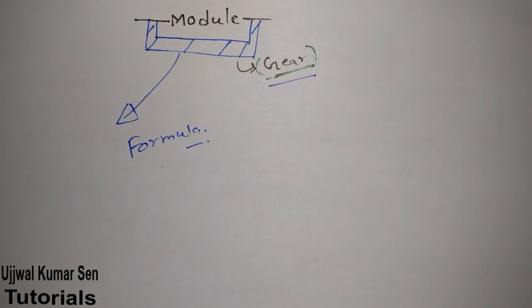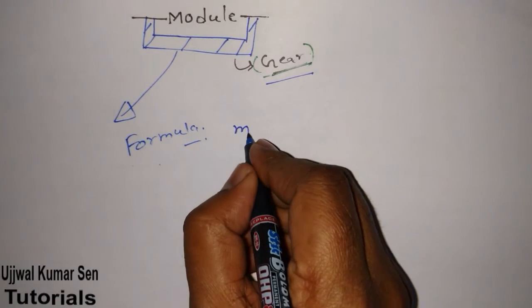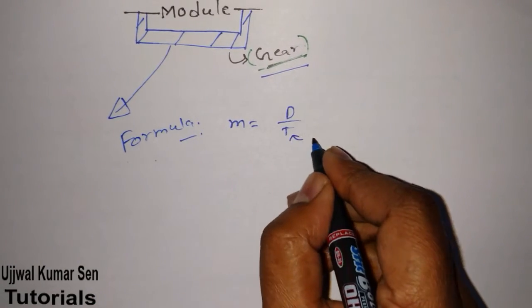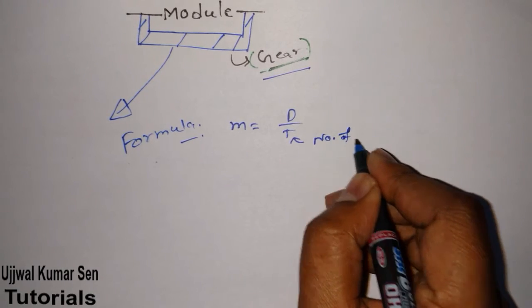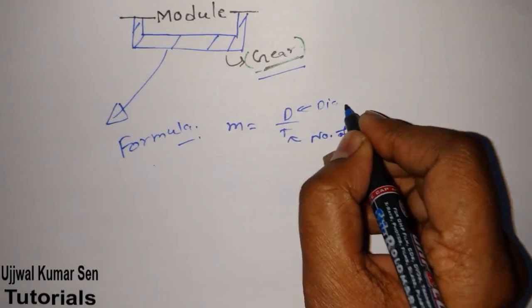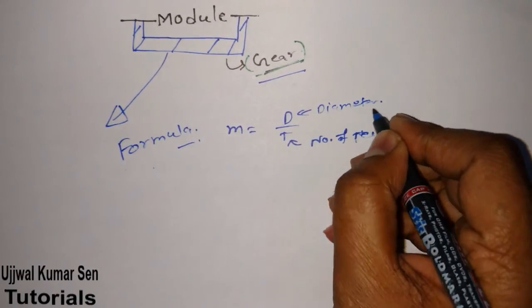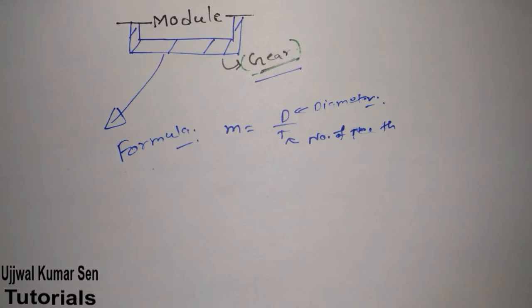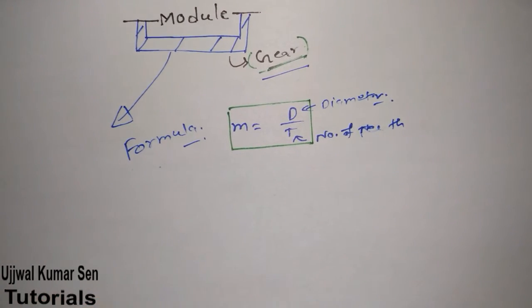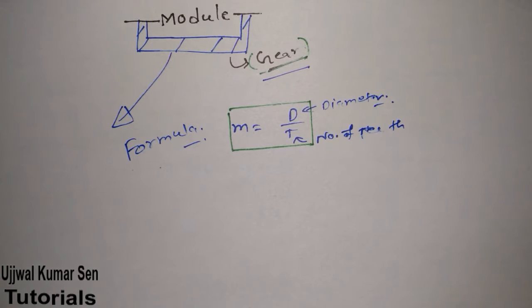So what is the formula for module? M is equal to D by T, where M is module, T is number of teeth, and D is diameter of the gear or pinion. This tutorial will cover numerical problems from GATE previous year papers based on this simple topic.